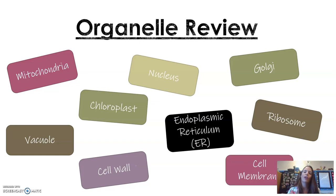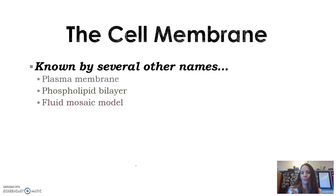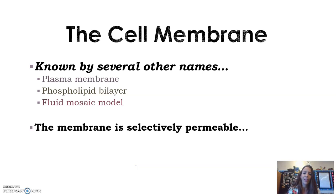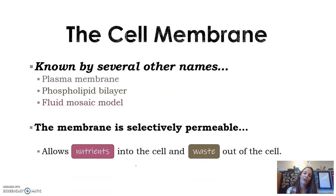We're going to get a little more into the cell membrane now. First, you should know the cell membrane is known by several other names: plasma membrane, phospholipid bilayer, and the fluid mosaic model. The membrane itself is also selectively permeable, which means it's choosy about what moves in and out of the cell — it allows things like nutrients in and waste out.